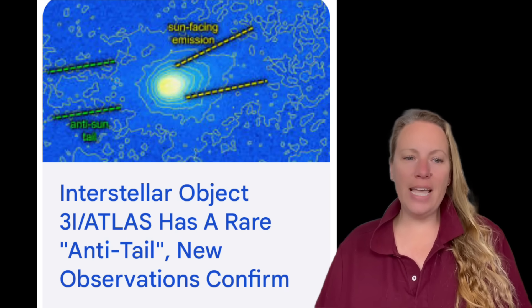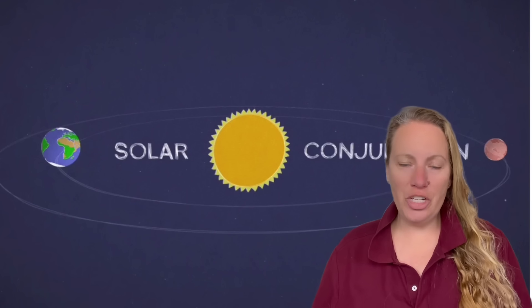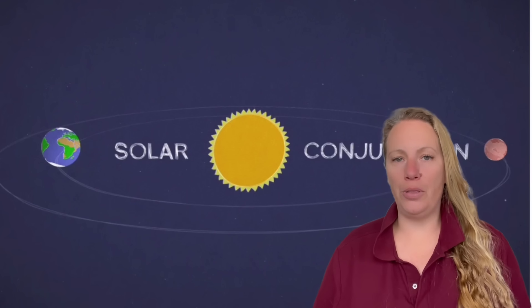Interstellar object 3A Atlas reaches solar conjunction tomorrow or right now whenever you watch this video. You see that image here. Basically, we will not be able to see it anymore from Earth because the Sun is between Atlas and Earth. So we can't see what's going on. And then on October 29th, it will reach perihelion, it will be closest to the Sun.